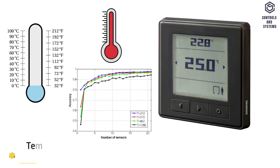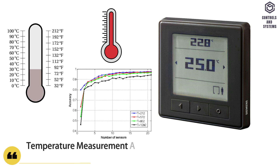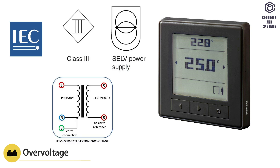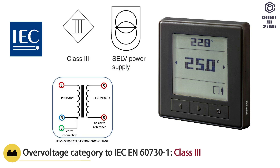Other data: temperature measurement accuracy is ±0.5 degrees Celsius at 25 degrees Celsius, ±1 degree Celsius maximum. Over voltage category 2 IEC EN is class 3.